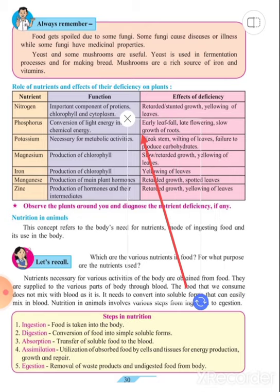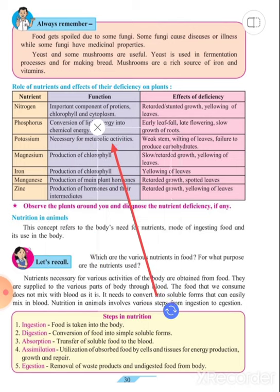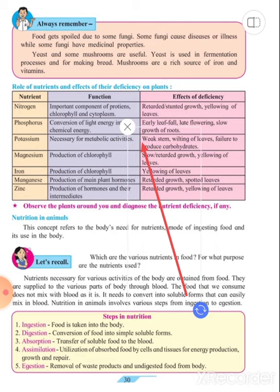The next is potassium. It is necessary for metabolic activities. If there is a deficiency of potassium, then we observe weak stem.